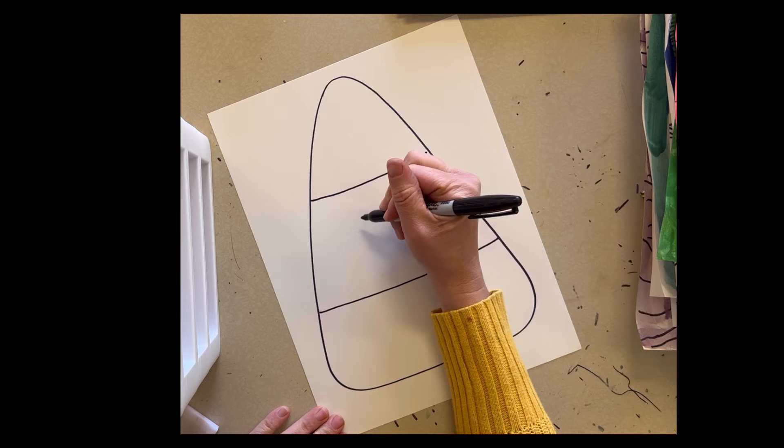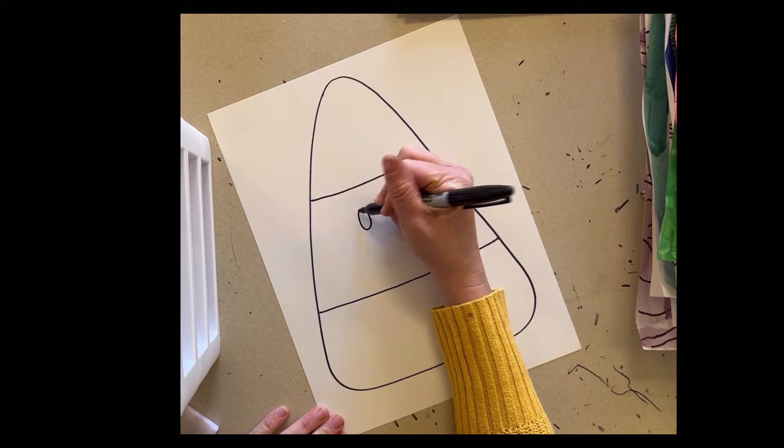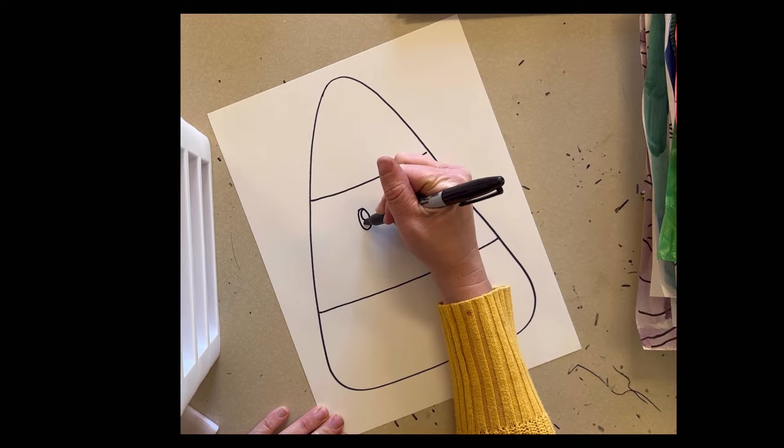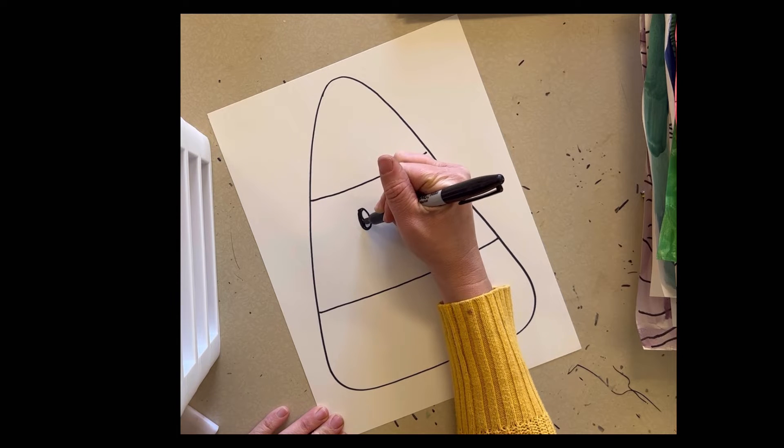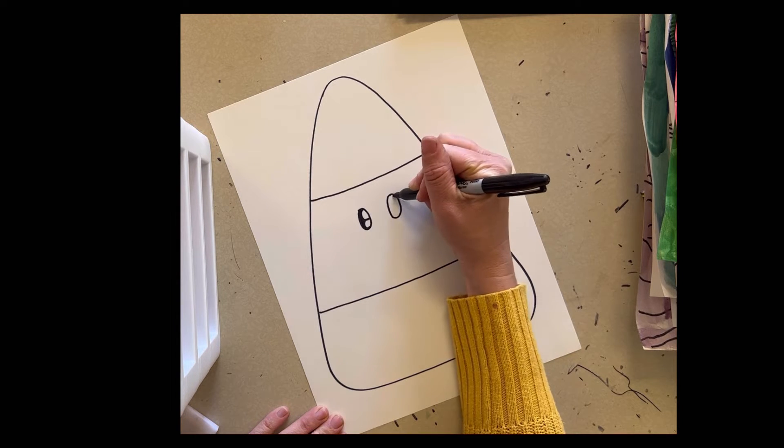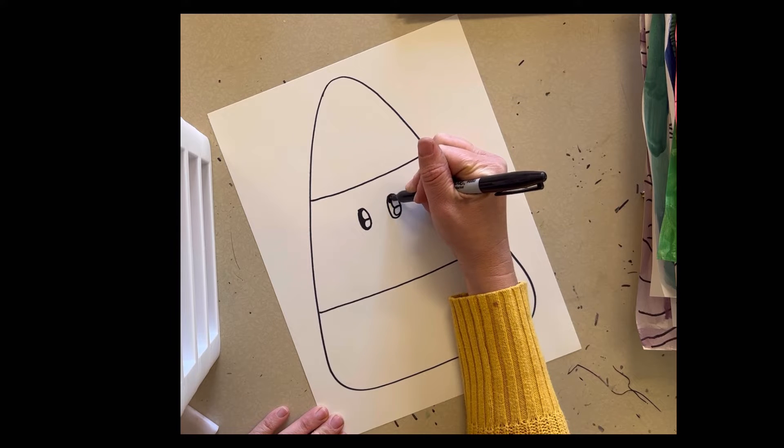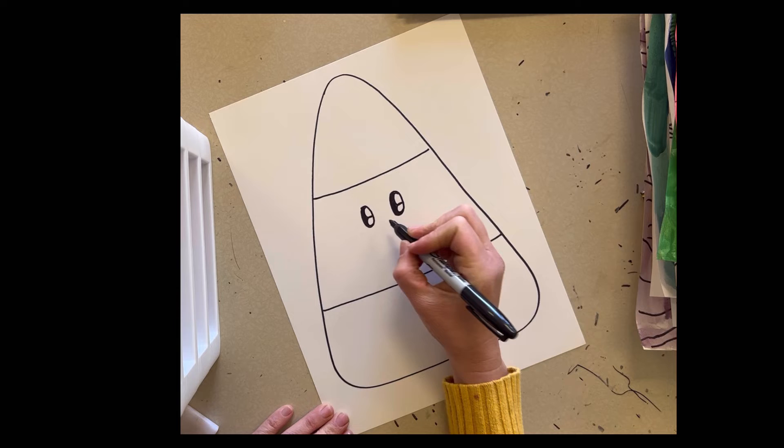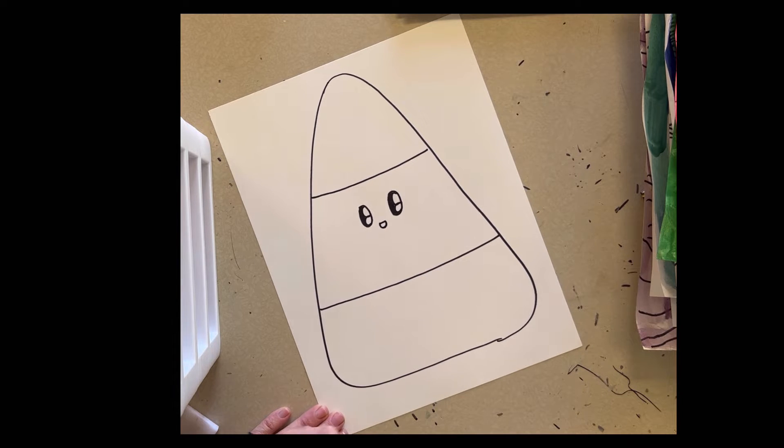In the middle or in the top, give your candy corn a face. You can do a cute face, you can do an angry face. You can give your candy corn eyelashes, eyebrows, cute eyes, angry eyes. You can give it a nose. You could just give it a little cute smile. Here we go.